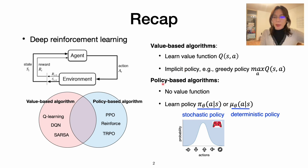Another one is the policy-based algorithm. This one has no need to learn a value function; it only needs to learn the policy. Here we introduce two types. One is stochastic policy — it learns the probability distribution over the actions. And another one is deterministic policy — it only makes one action at a time.